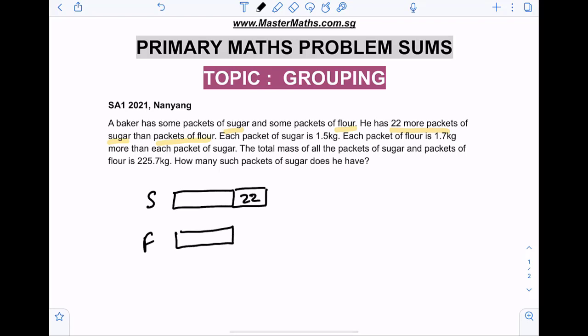So we can quickly draw a model to visualize this. Each packet of sugar is 1.5 kg. Each packet of flour is 1.7 kg more than each packet of sugar. So we list this down: Sugar is 1.5 kg, flour will be 1.7 more, so 1.7 plus 1.5, that will be 3.2 kilograms for each packet of flour.